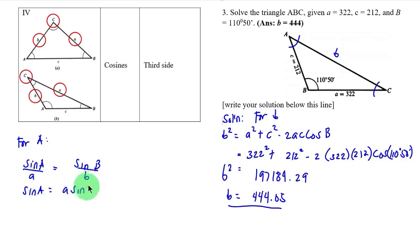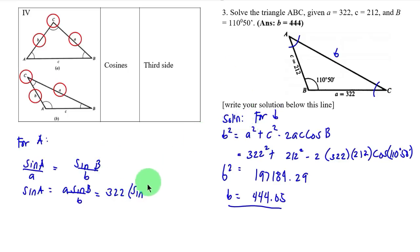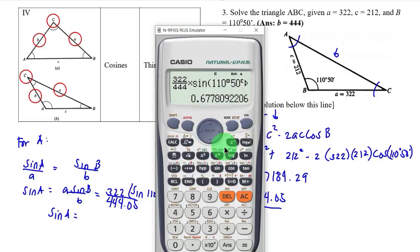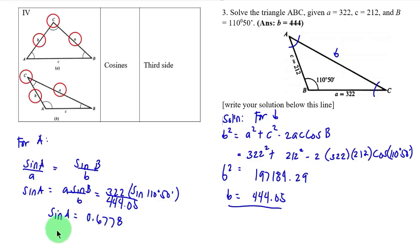Rearranging, sine A equals a multiplied by sine B over b. Substituting: a is 322, multiplied by sine of 110 degrees 50 minutes, all over 444.05. So sine A equals 0.6778.